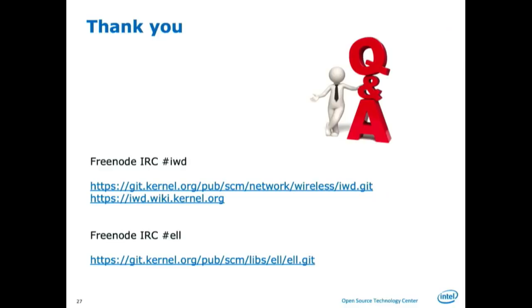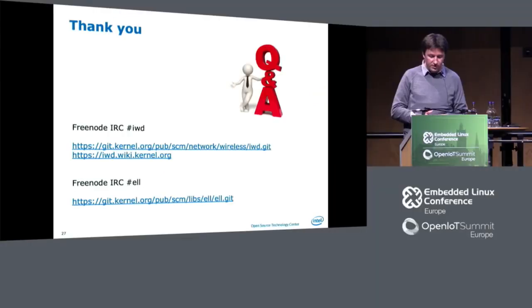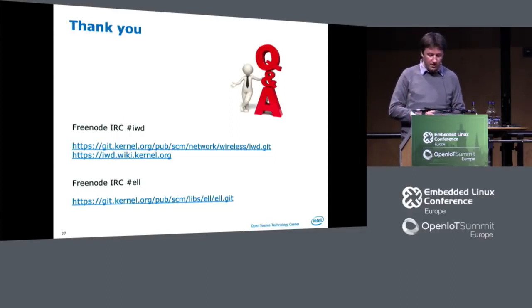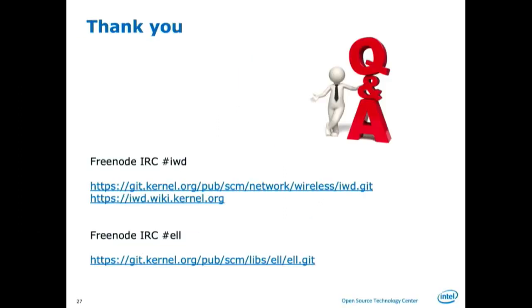Freenode IRC for IWD, Freenode IRC for ELL — that's where most communication happens. The mailing lists are there as well. IWD has a kernel wiki, and contributions to documentation are welcome. There are wikis for different distros — the Arch wiki for IWD is pretty good if you want to get started. The Git trees have the most information and documentation in them as well. I was going to do a demo but I'll open it for questions first.